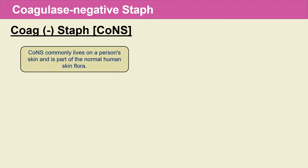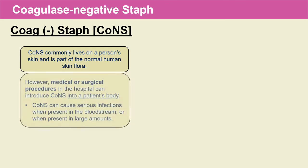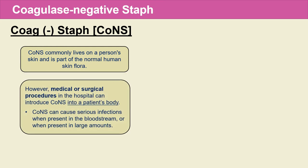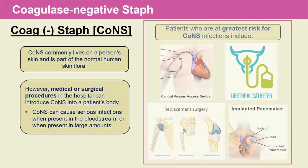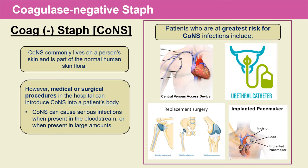Coagulase-negative staph commonly lives on a person's skin and is part of the normal human skin flora. However, medical or surgical procedures in the hospital can introduce CoNS into a patient's body, causing serious infections when present in the bloodstream or in large amounts. Patients at greatest risk for CoNS infections include those with internal devices — central lines, Foley catheters, joint replacement surgery (shoulder, hip, or knee), or patients with pacemakers implanted.